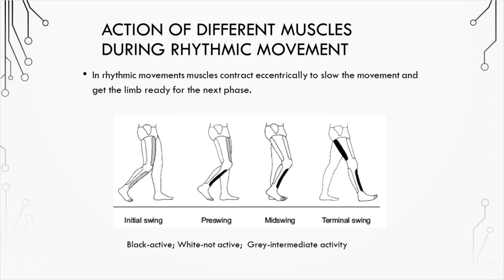In activities such as walking, we have eccentric contractions that are slowing the movement and getting the limb ready for the next phase. For instance, at the end of swing phase, the hamstrings will contract to slow the leg and prepare it for weight acceptance. In weight-bearing activities, or when you're in a position where you need to resist gravity, most often you'll be performing an eccentric contraction to resist gravity, unless you're actively trying to accelerate in the same direction as gravity.